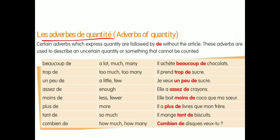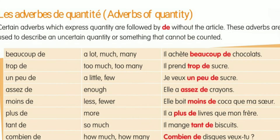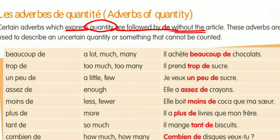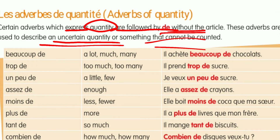Here you have the article quantité — these are adverbs of quantity. Certain verbs which express quantities are followed by 'de'. Things which express any quantity — like too much, enough, so much, more, many, few — these are always written with the word 'de', without any article. These adverbs are used to describe an uncertain quantity, something that cannot be counted — uncountable.